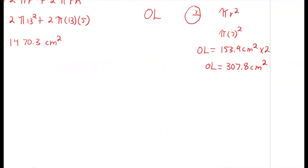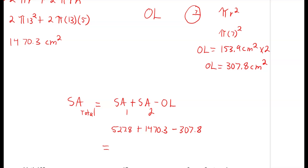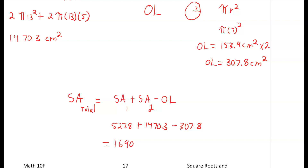The last step: total surface area equals SA1 plus SA2 subtract our overlap. So 527.8 plus 1,470.3 subtract 307.8 gives us a final answer of 1,690.3 centimeters squared.